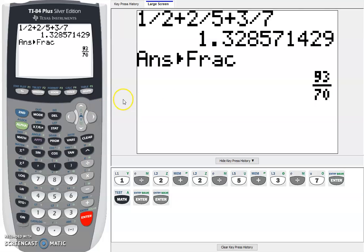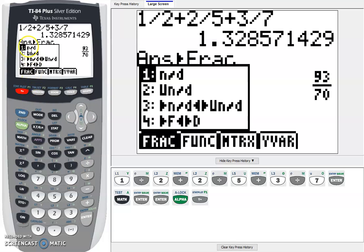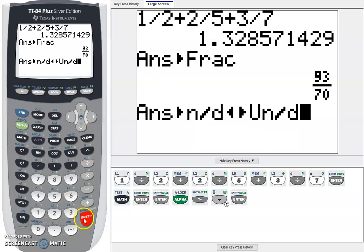But what if you actually want a mixed fraction? What we could do really easily is press alpha and then this y equals. If you look here, we have a menu of things. If we go to number 3, we can either click 3 or scroll down to number 3 and press enter.